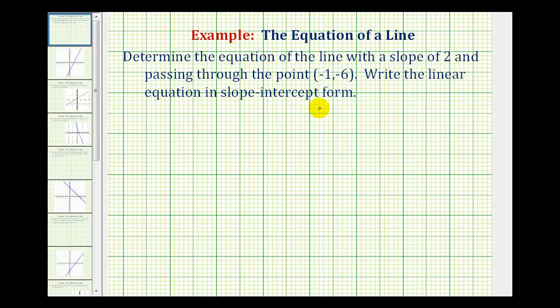So we can determine the equation of this line using just slope-intercept form or we could also use point-slope form. In this video, we're only going to use slope-intercept form, which is the form y equals mx plus b, where m is the slope of the line and b is the y-intercept of the line.